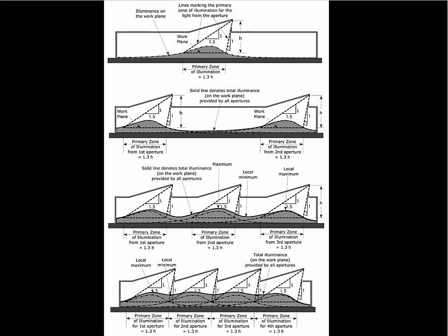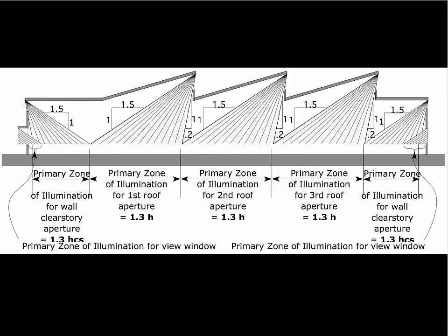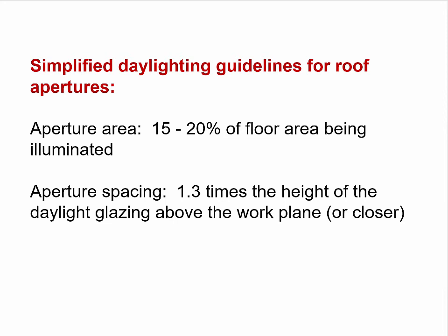We'll go through a series of examples examining the issue of aperture spacing, generating geometric constructs that help designers figure out appropriate spacing for roof apertures. We'll come up with simplified guidelines — for example, the area of glazing should be 15 to 20 percent of the floor area being illuminated, and the aperture spacing should be 1.3 times the height of the daylight glazing above the work plane. In a typical office or library, that work plane is taken as two and a half feet off the floor.